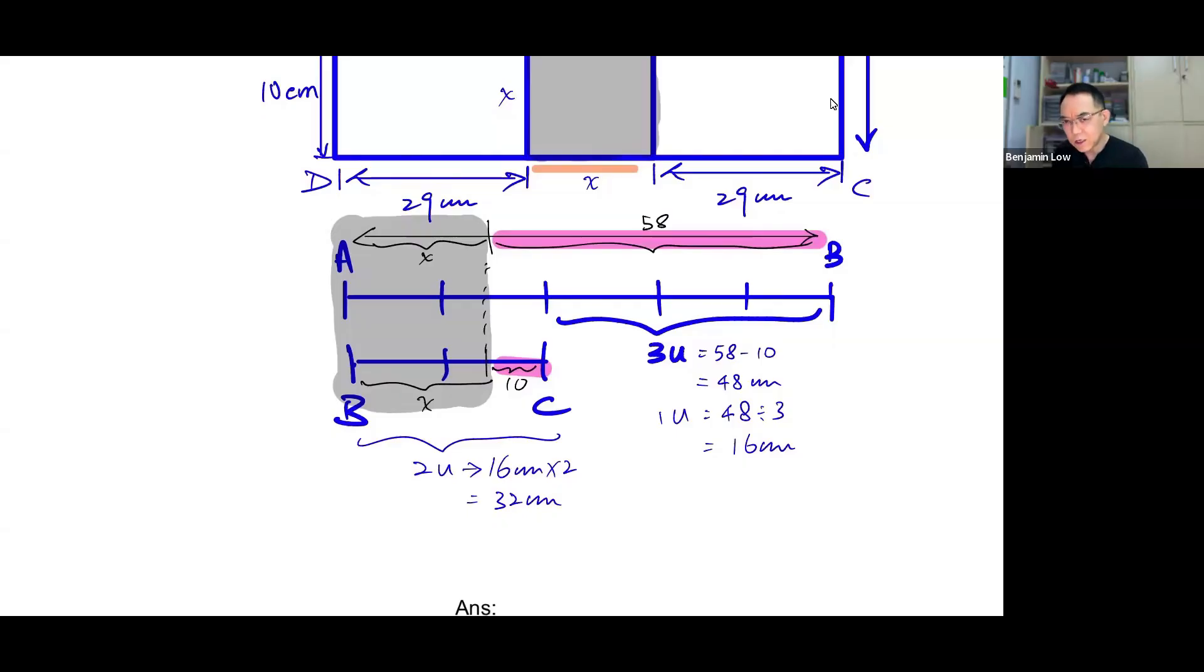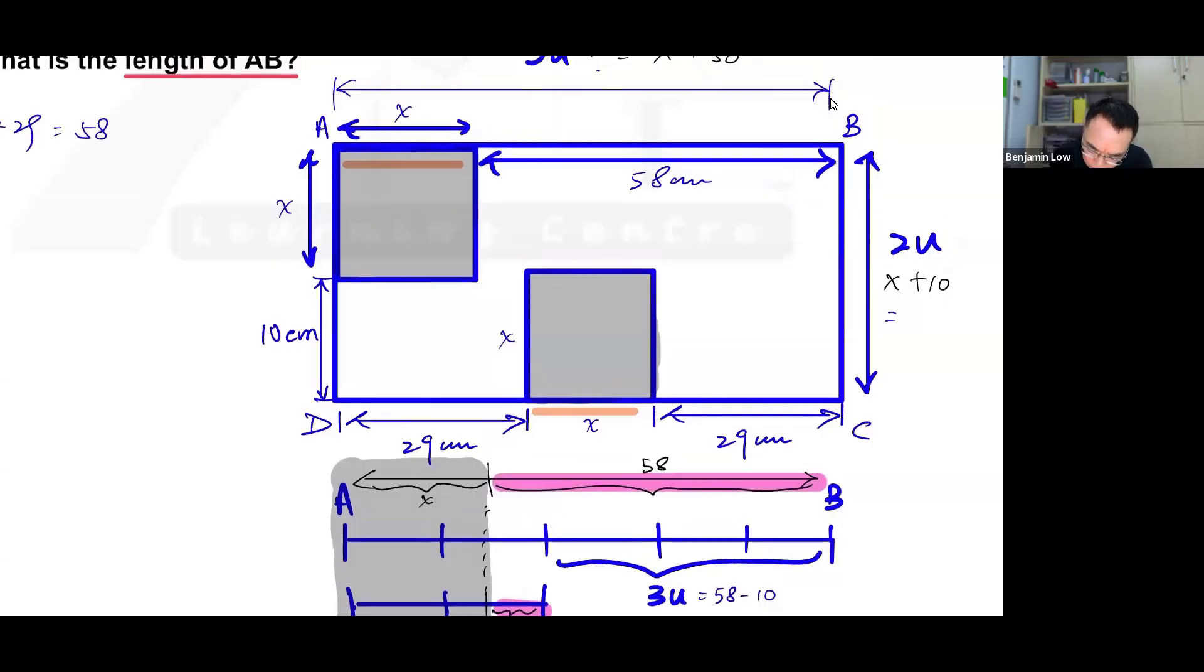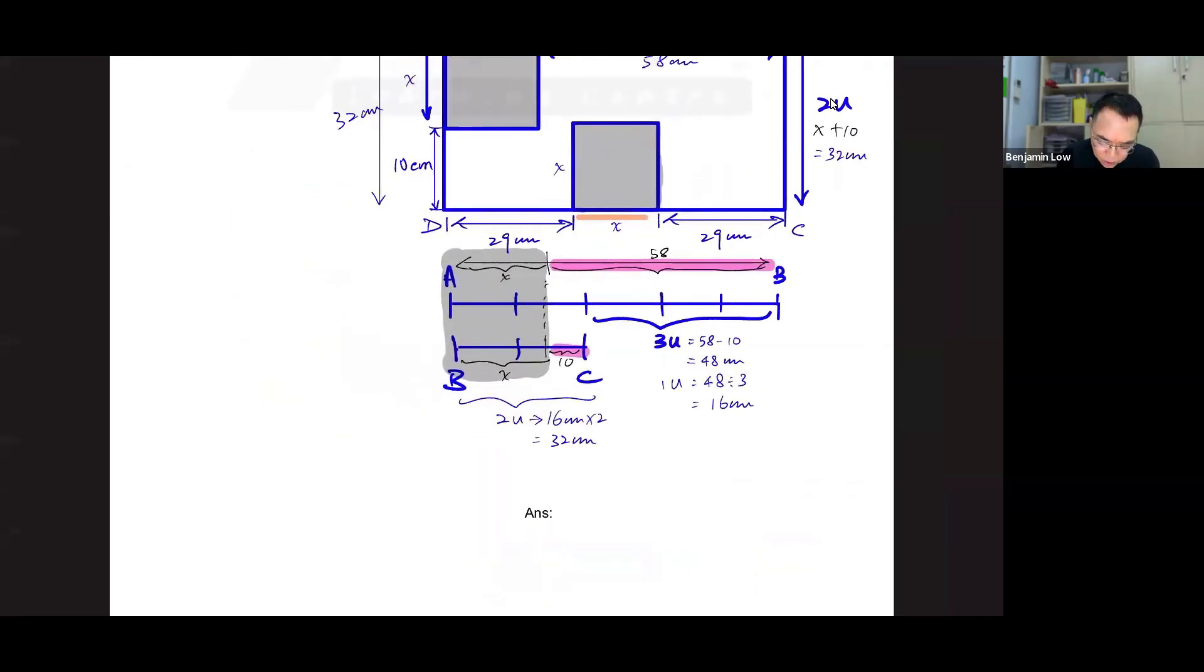And if this is 32 cm, then I now know that this is 32, and of course, this is also 32. And with this, you will be able to find the value of x. Okay? You can see here clearly, this is 32, this is 10, therefore, this must be 22. So we now know that the value of x is 22.